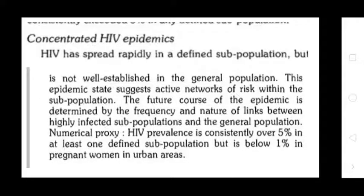2. Concentrated HIV Epidemics: HIV has spread rapidly in different subpopulations but is not well established in the general population. This epidemic state suggests active networks of risk within subpopulations. The future course of the epidemic is determined by the frequency and nature of links between highly infected subpopulations and the general population. HIV prevalence is consistently over 5% in at least one defined subpopulation but below 1% in pregnant women in urban areas.